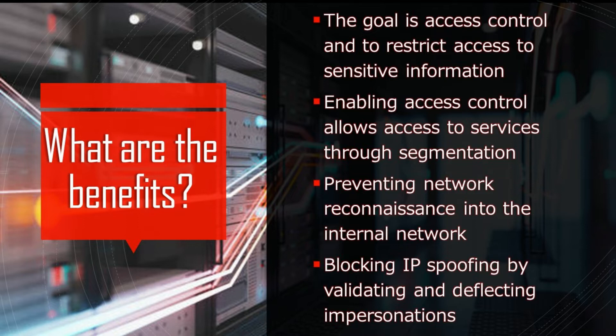The DMZ also provides extra security through enabling access control, preventing network reconnaissance, and blocking IP spoofing. Enabling access control allows an organization to provide access to their services from the internet without granting access to internal networks through segmentation. As for preventing network reconnaissance, there's a buffer between the internet and the DMZ, which helps prevent threat actors from performing reconnaissance. On top of the DMZ being segmented, there's an additional firewall, ultimately preventing anyone from seeing inside the internal network. If the DMZ gets compromised, the internal firewall will keep the private network separated from the DMZ, keeping it secure and making external reconnaissance hard.